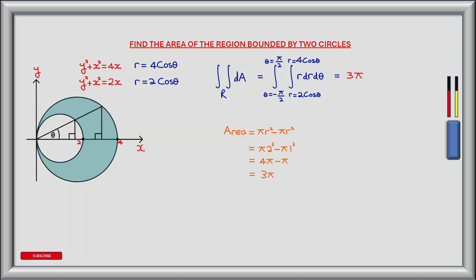We can check our answer by calculating the area of the inner circle and subtracting it from the area of the outer circle using the formula pi r squared. The radius of the outer circle is 2 and the radius of the inner circle is 1. So the area of the outer circle is pi times 2 squared equals 4 pi, and the area of the inner circle is pi times 1 squared equals pi. Therefore 4 pi minus pi equals 3 pi, confirming our answer.